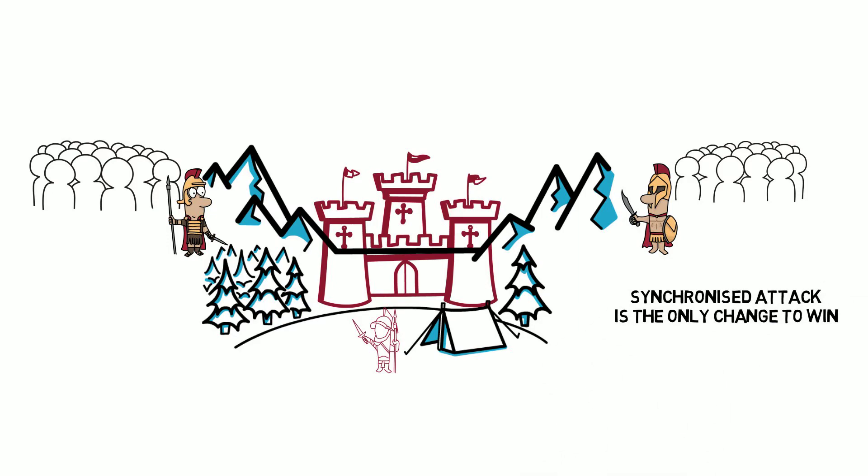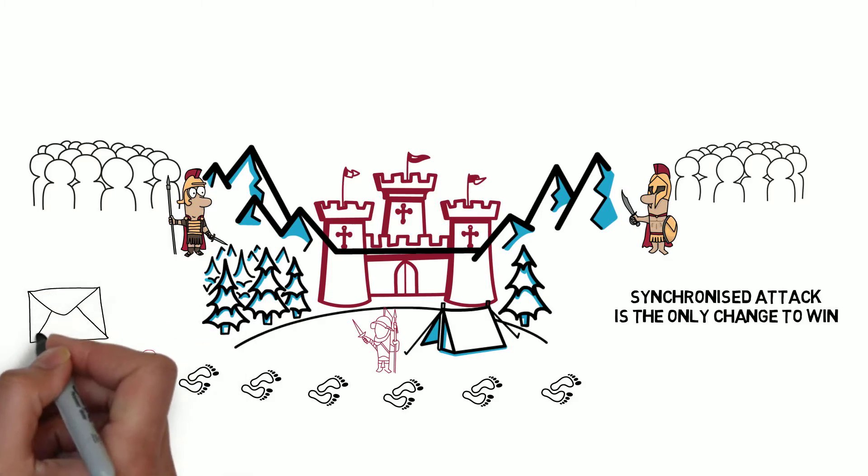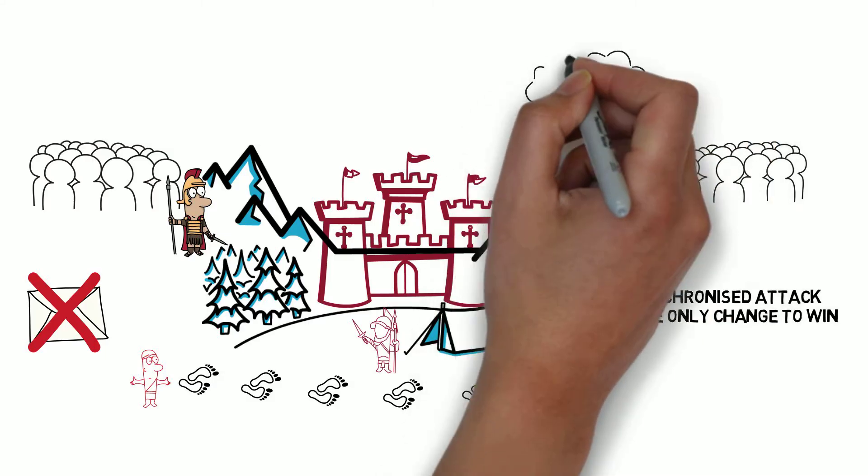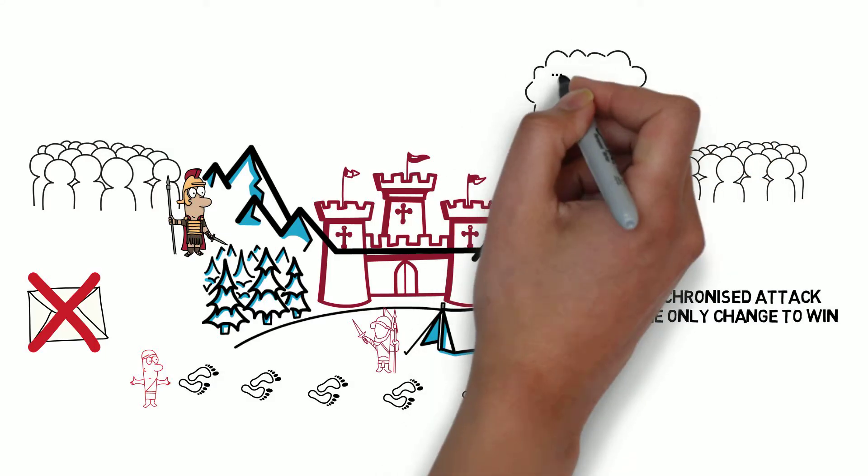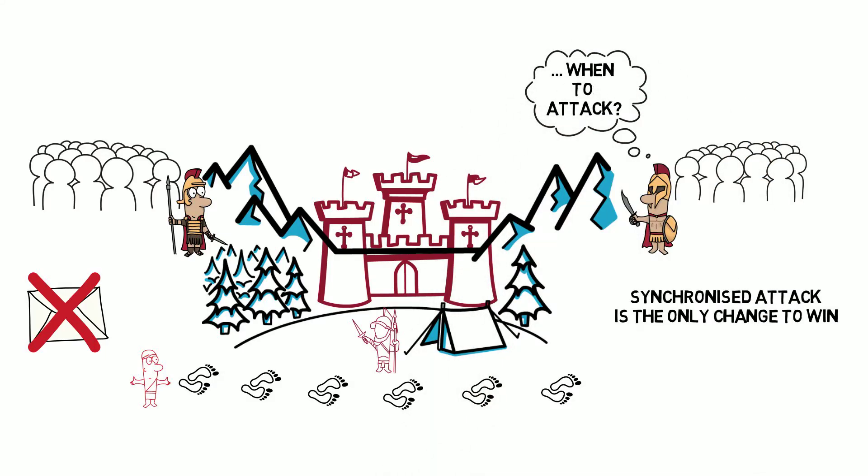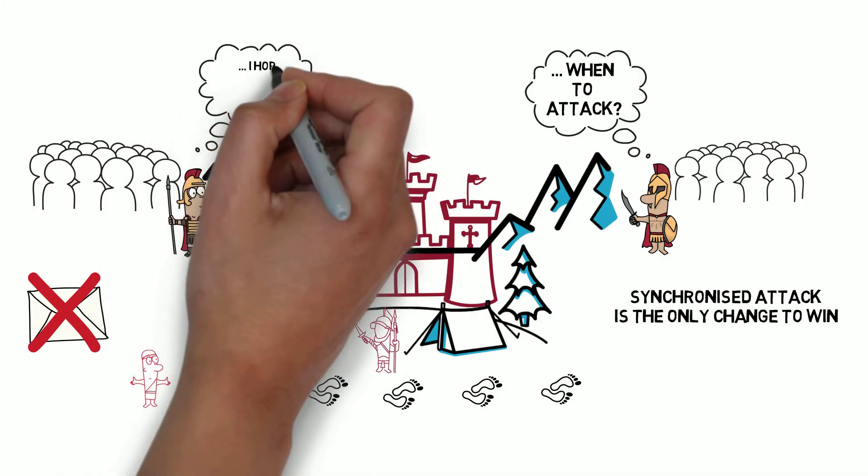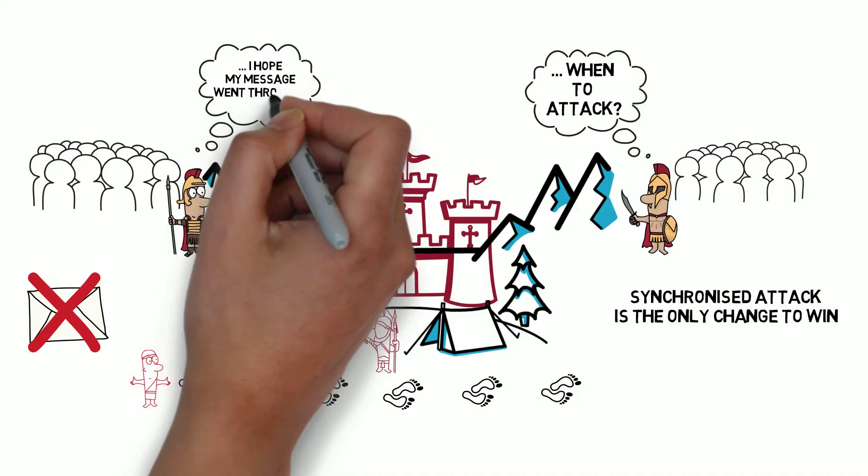The only problem is that to communicate with each other, they have to send a messenger across the enemy's territory. If a messenger is captured, the message he's carrying is lost. Also, each general wants to know that the other general knows when to attack. Otherwise, a general wouldn't be sure if he's attacking alone, and as we know attacking alone is rather pointless.